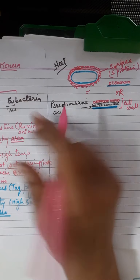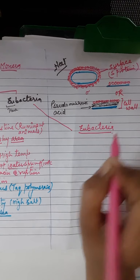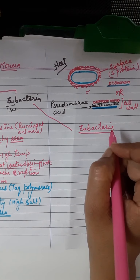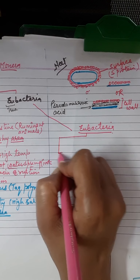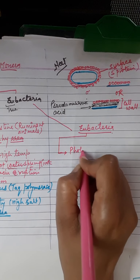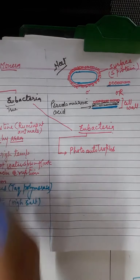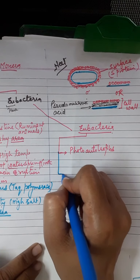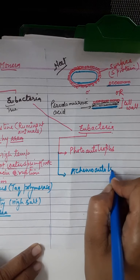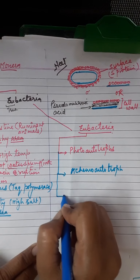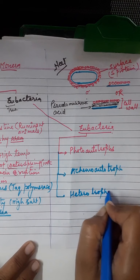Now we move on to Eubacteria — true bacteria that show all characteristics of bacteria. Eubacteria can also be divided into three categories: first, photo autotrophs; second, chemo autotrophs; and third, heterotrophs.